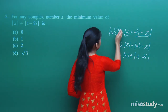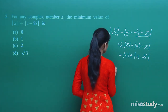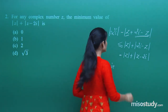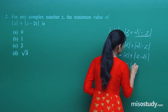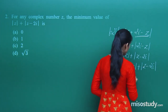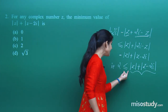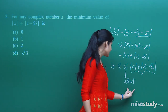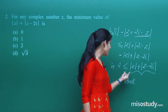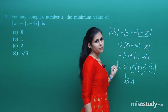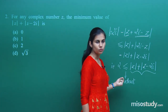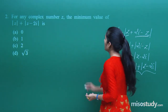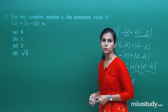What you are getting is that mod of 2 iota is less than or equal to mod z plus mod of z minus 2 iota. Modulus of 2 iota is 2. So 2 is less than or equal to mod z plus mod of z minus 2 iota. That means this expression is at least 2. This expression can attain a minimum value of 2 and a maximum of anything, but it can never be less than 2. Therefore the minimum value is 2.